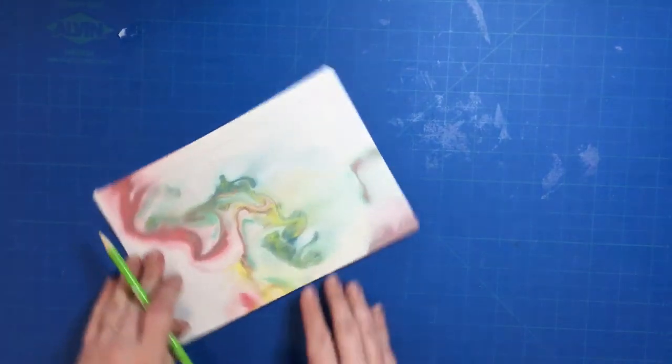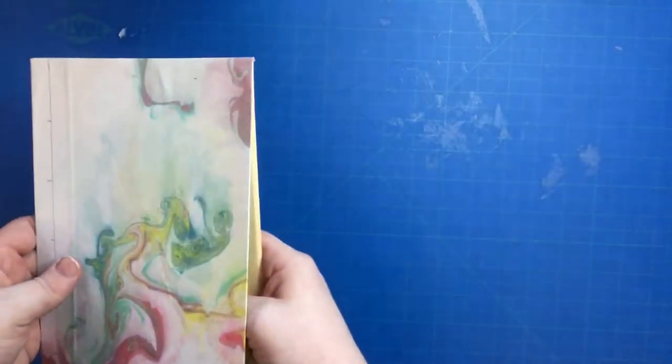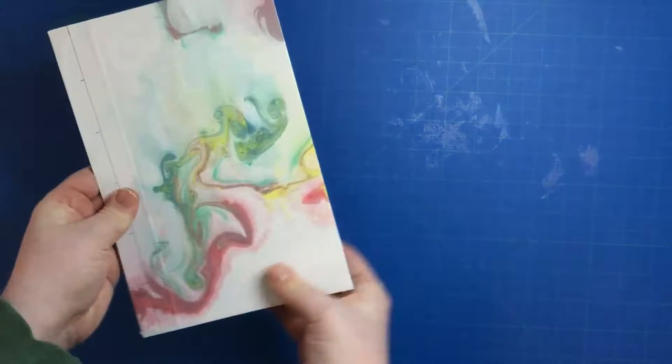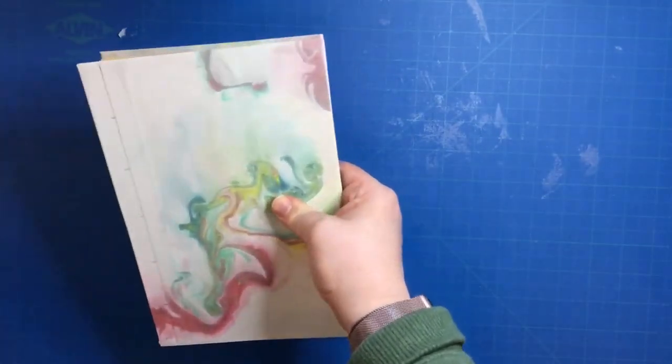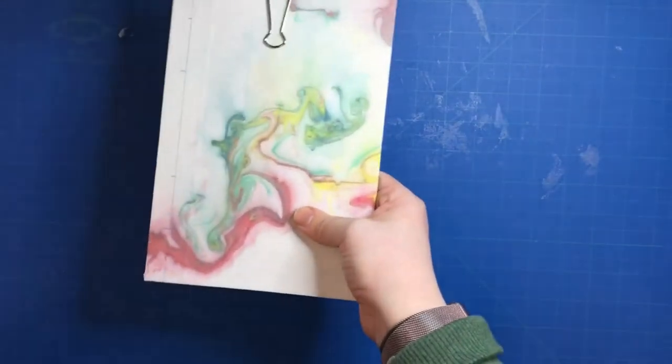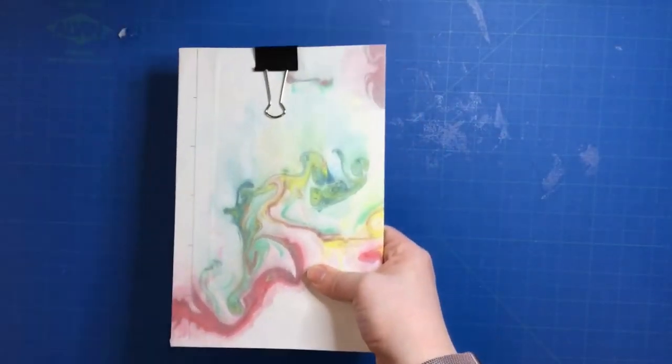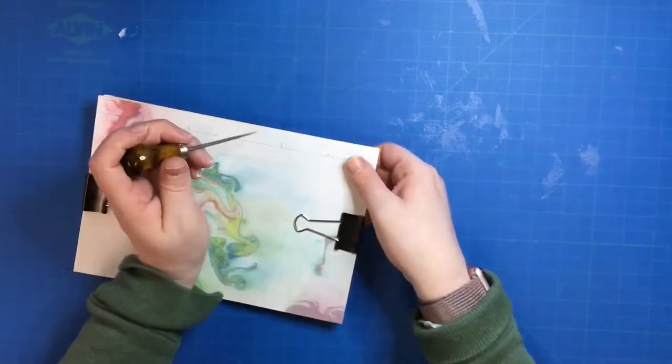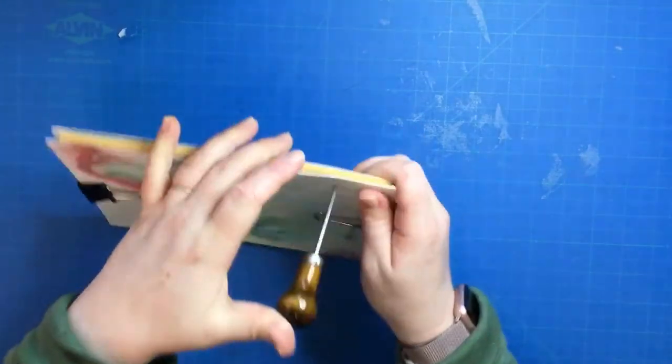Once you have your measurements, get your paper and your back cover and line it up nicely. Get two binder clips, one at the top and one at the bottom. You're going to leave these on until we are completely done with our sketchbook.